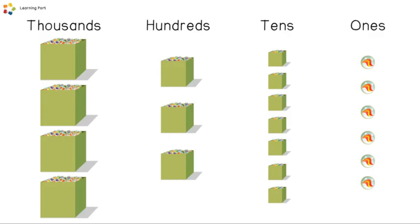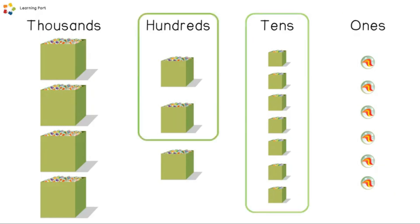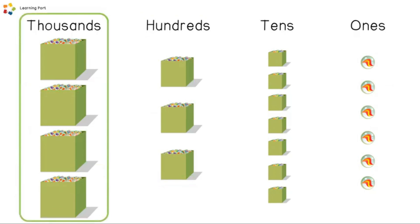Let's help Fabian count his marbles. To help him, we must know about place value. Place value helps us to understand the value of numbers. Place value tells us which numbers are ones, tens, hundreds, and thousands.